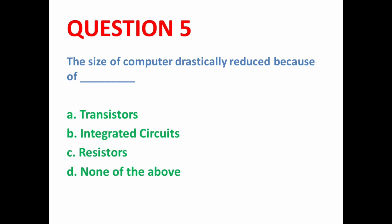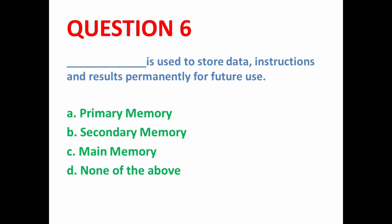Next MCQ: The size of the computer drastically reduced because of dash. As we know, as each new generation of computers came, the size of the computer kept decreasing. This happened because of Integrated Circuits. So here option B is the correct option.